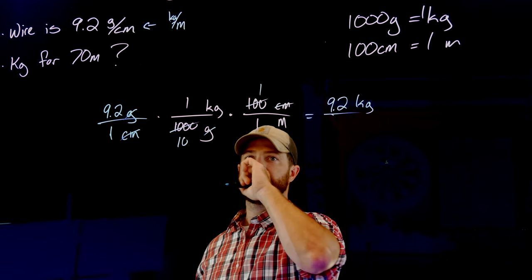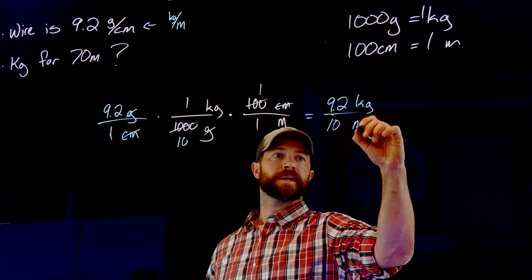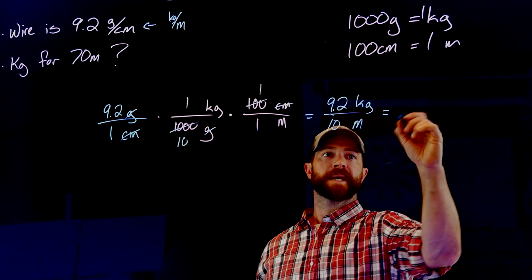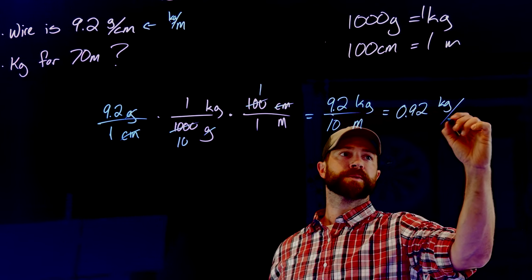Now it's my unit on top. And then the bottom I get 10 meters as my units. If I divide this, what I would get is 0.92 kilograms per meter.